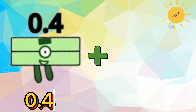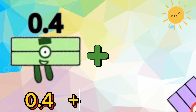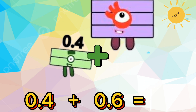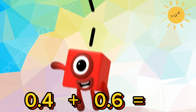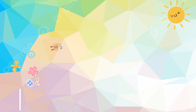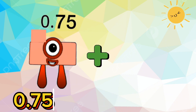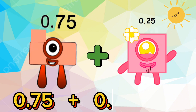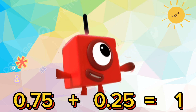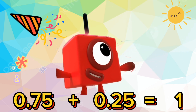0.4 plus 0.6 is equals to 1. 0.75 plus 0.25 is equals to 1.